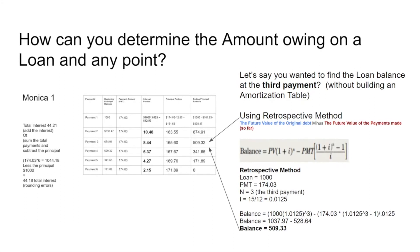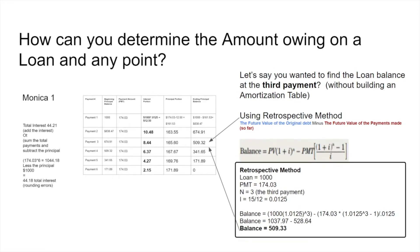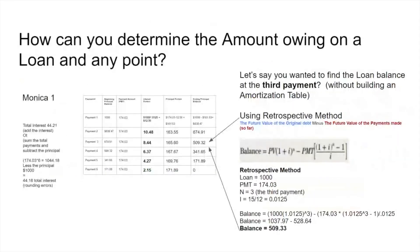So effectively, what the retrospective method has done is calculated the balance of the loan at the third period. Let's check it against the amortization table — same number: $509.32. So effectively, we don't have to do this table if we can use the retrospective method. That's really all there is to it. You've got to take the future value of the original amount borrowed, the future value of the stream of payments made, subtract one from the other, and you've got your balance.